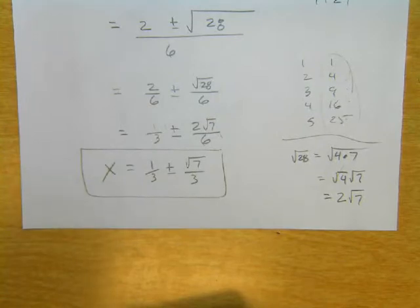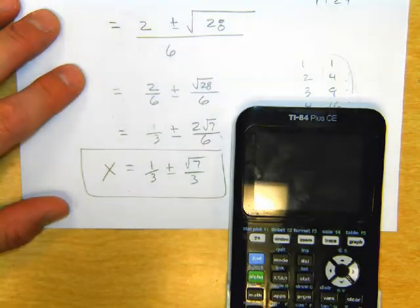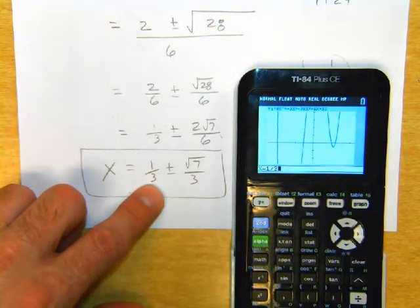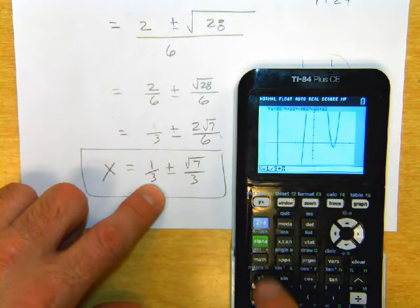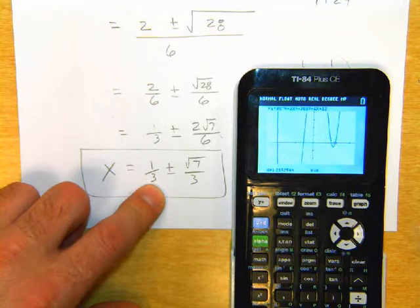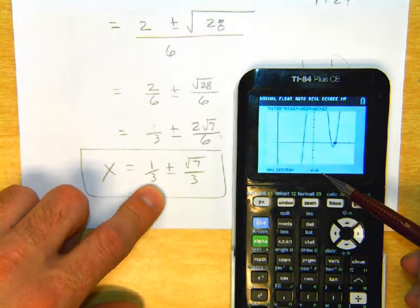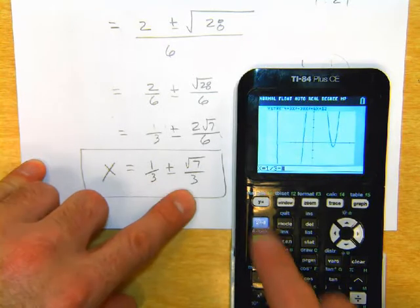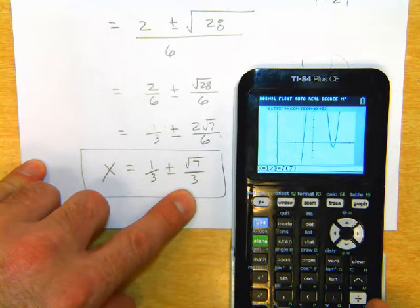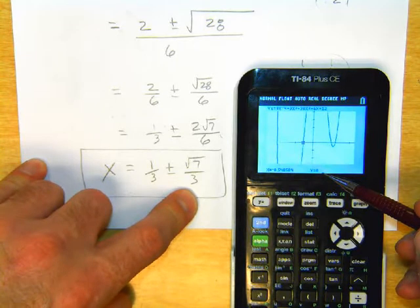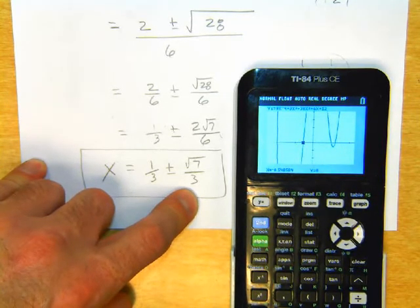Going back to the calculator and pressing trace, we enter 1/3 + √7/3 and get y = 0, and 1/3 − √7/3 also gives y = 0. So both irrational roots check out. There's no homework tonight — we're going to spend all of class just practicing problems like this.